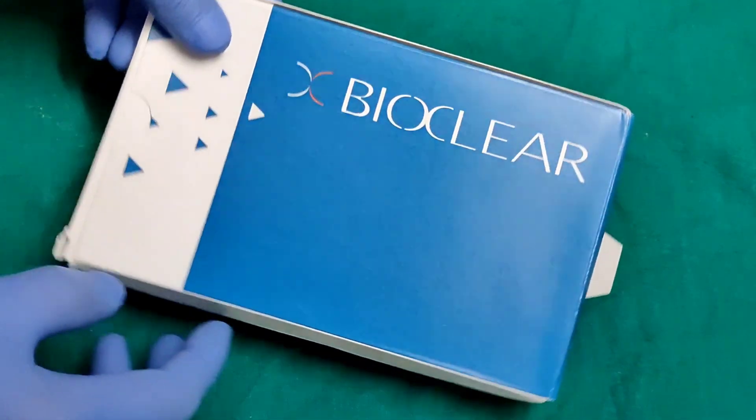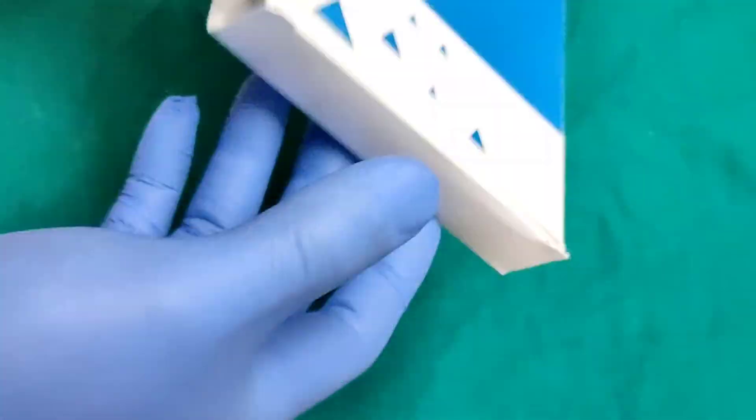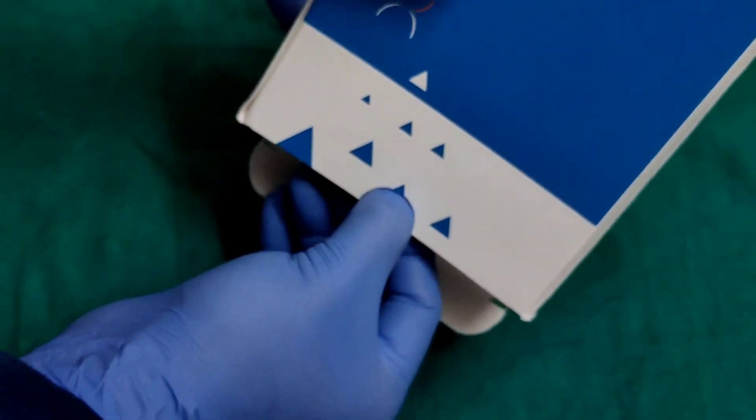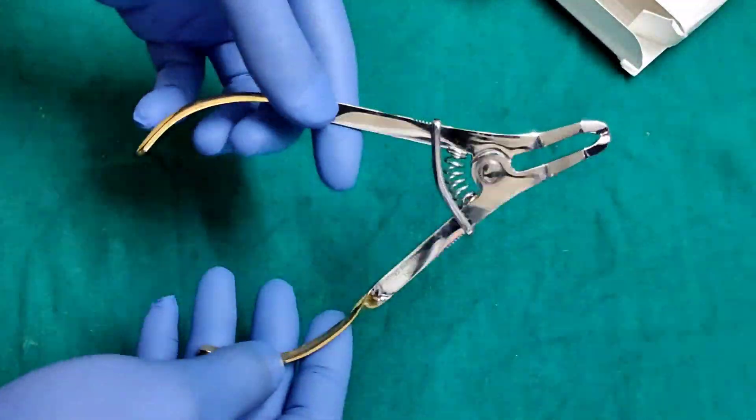BioClear's posterior matrix system also comes with the BioClear design forceps, which is used to hold and carry the twin ring to the site of cavity preparation.